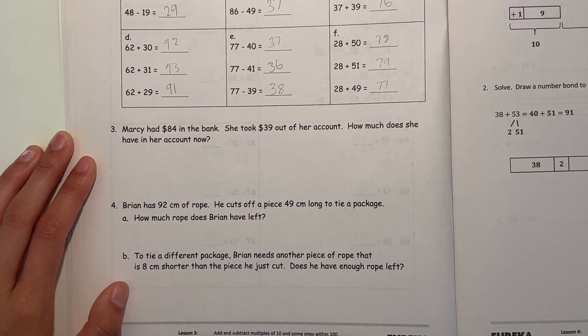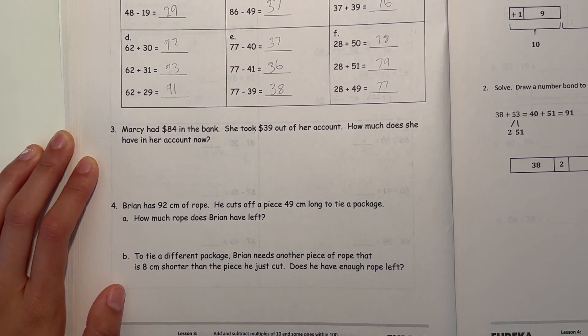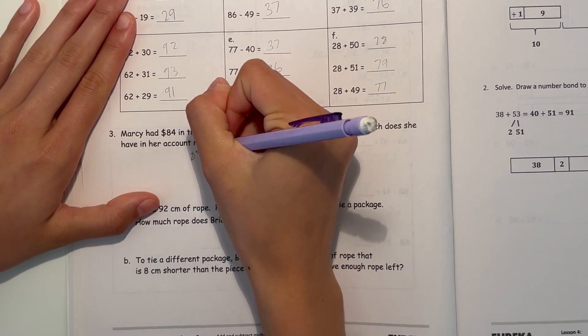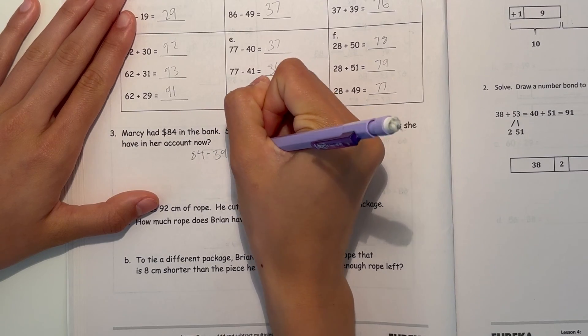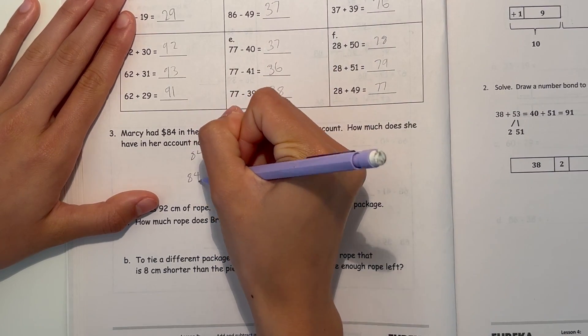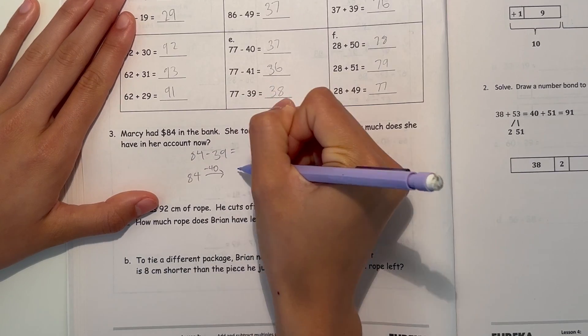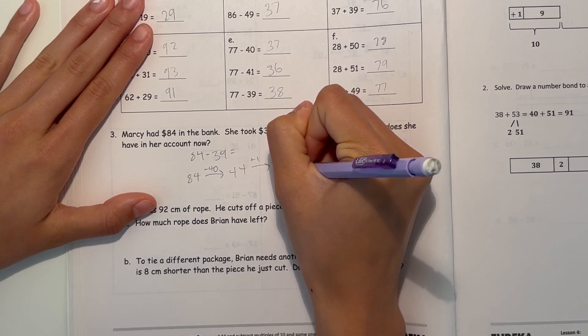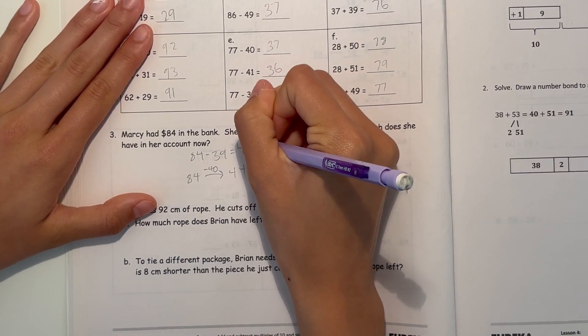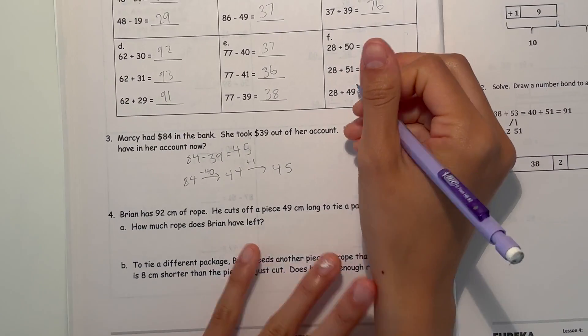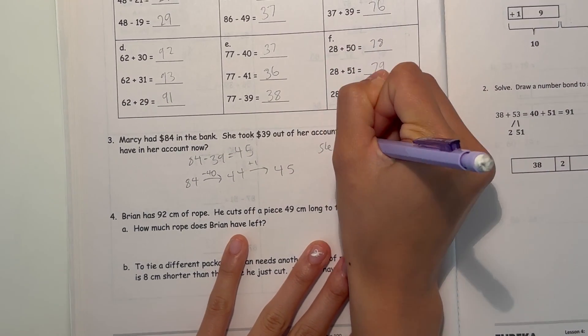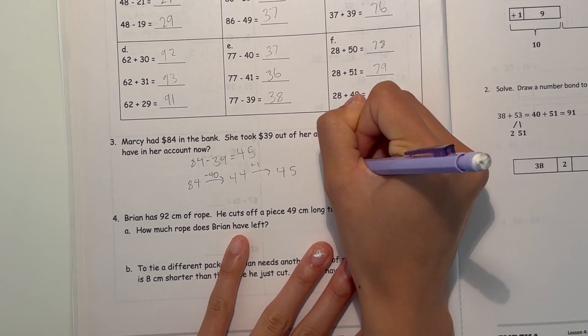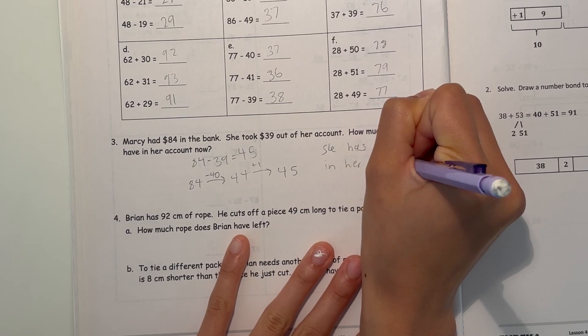Now number 3. Marcy had $84 in the bank. She took $39 out of her account. How much does she have in her account now? So 84 minus 39, let's subtract 40 to get 44. We can add back that 1 that we subtracted, so the answer is 45. That means she has $45 in her account.